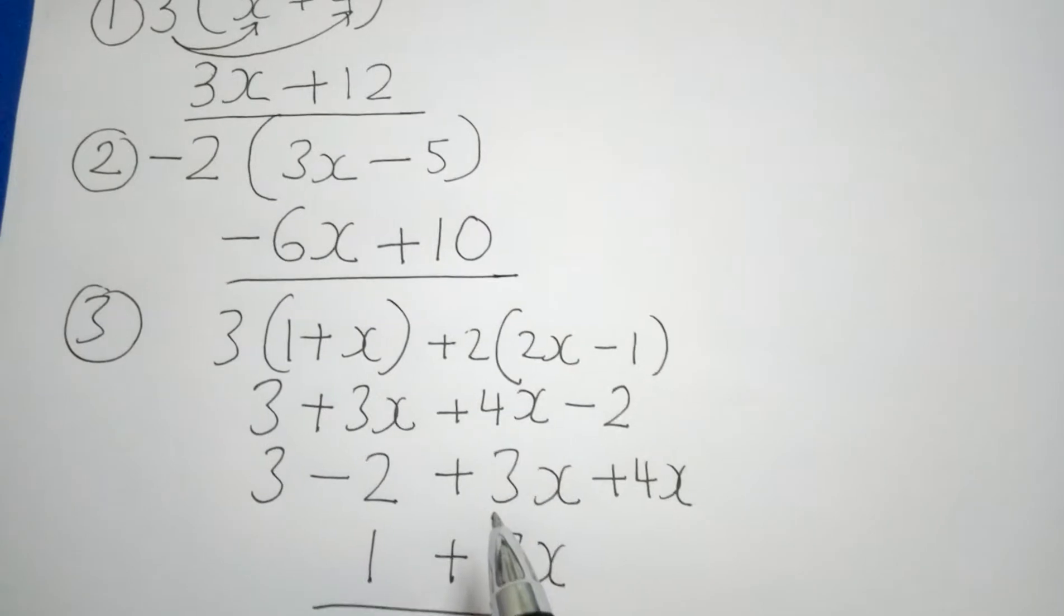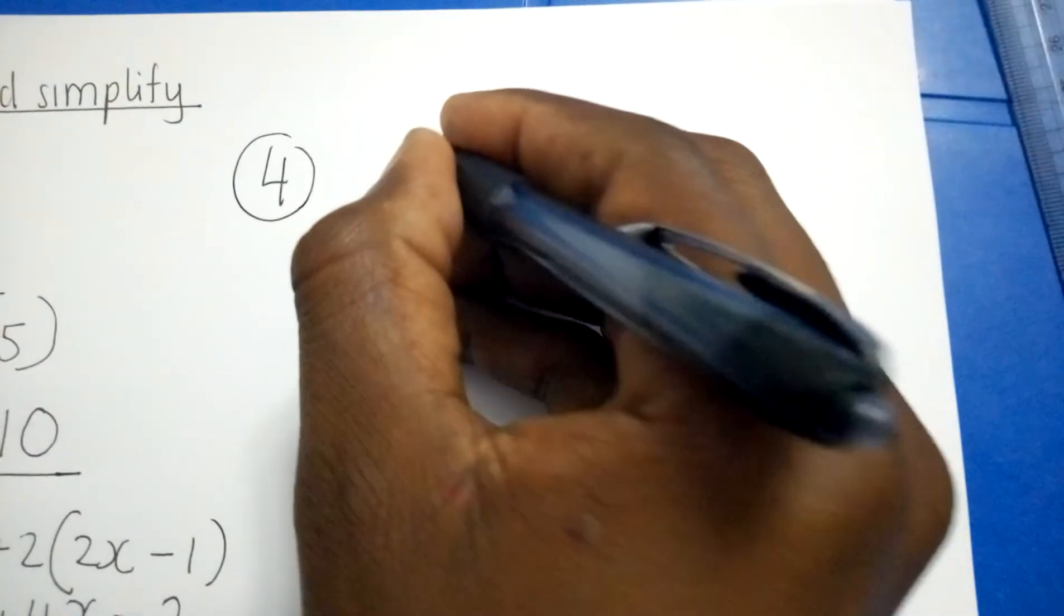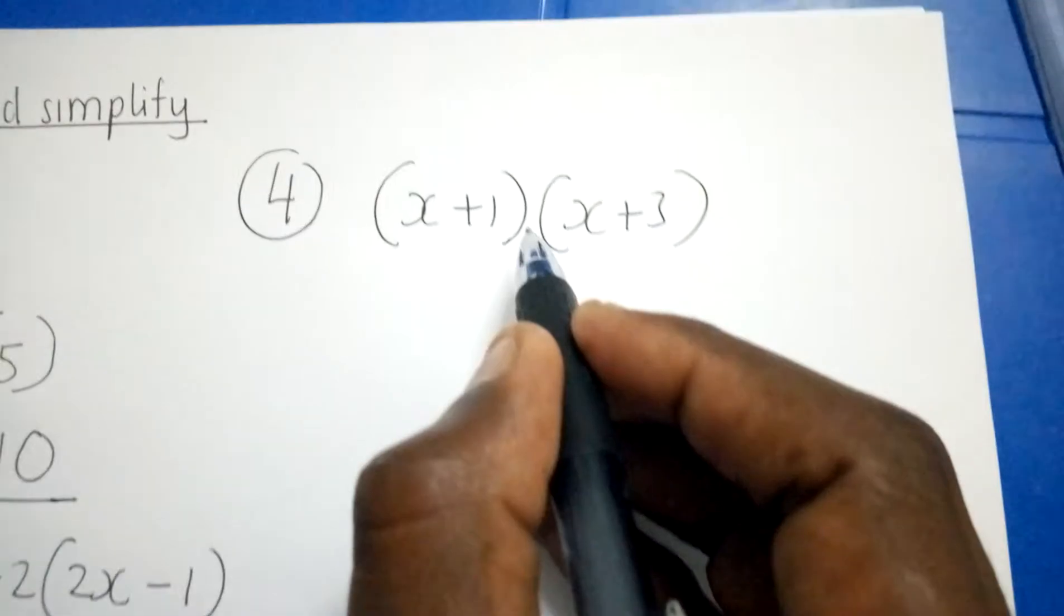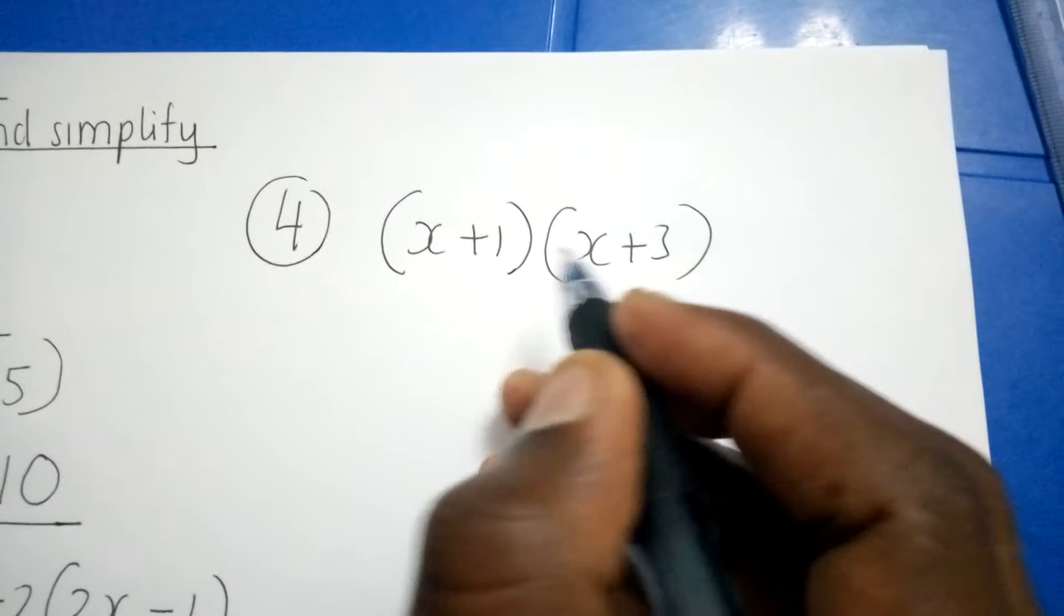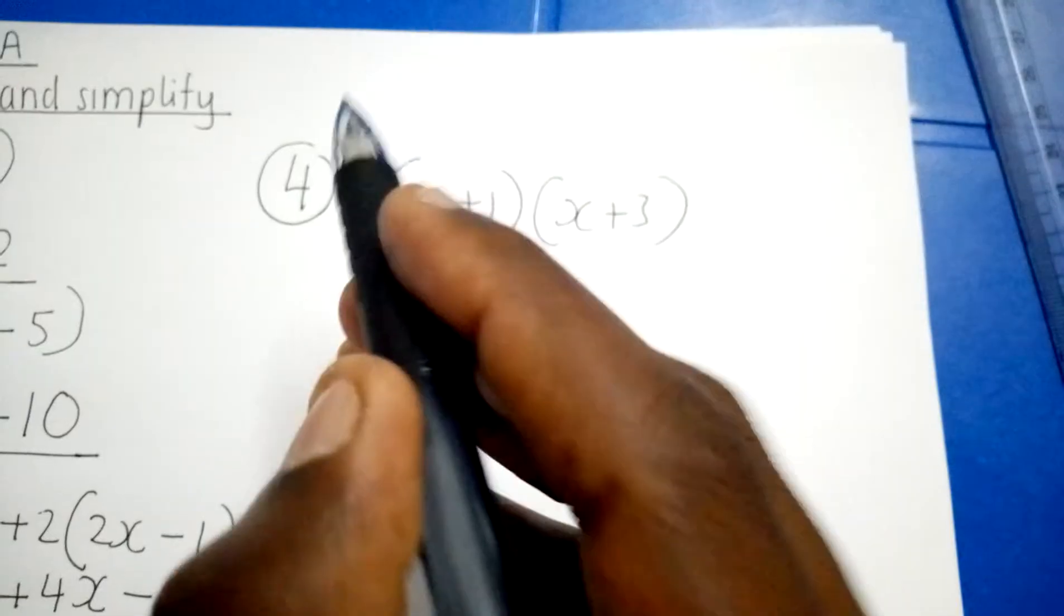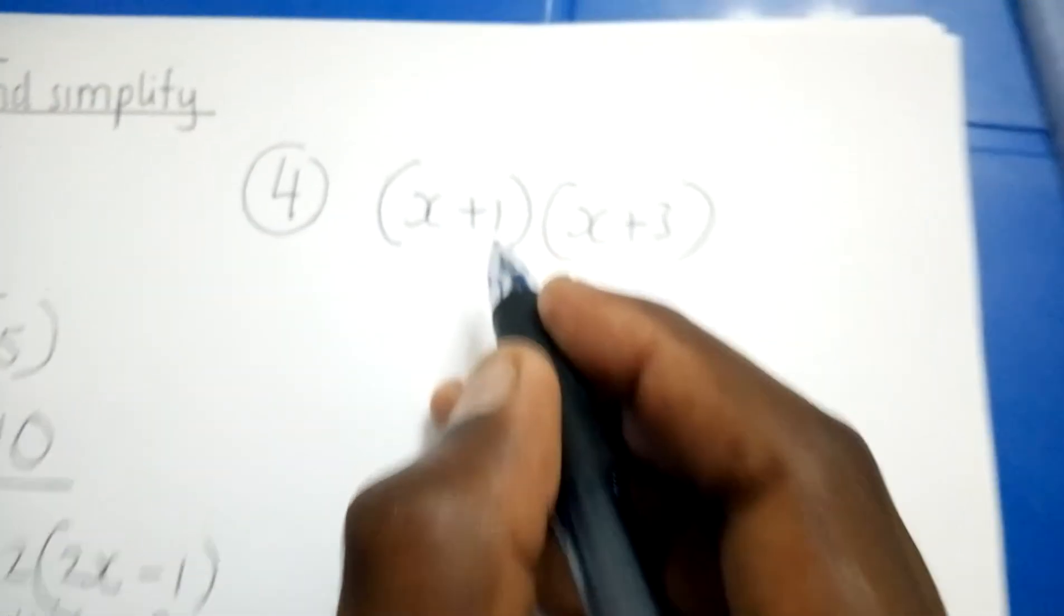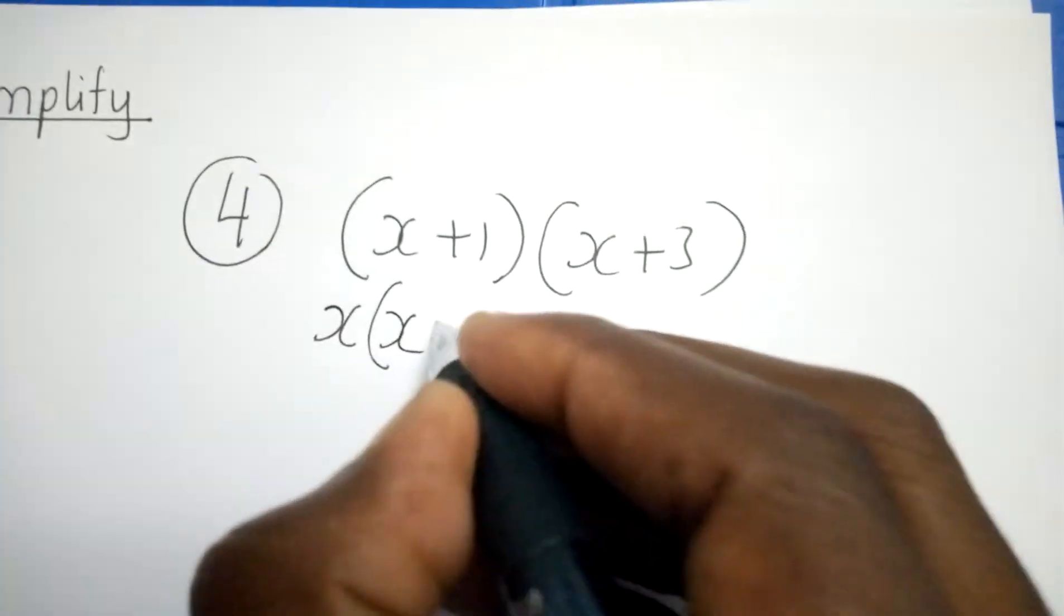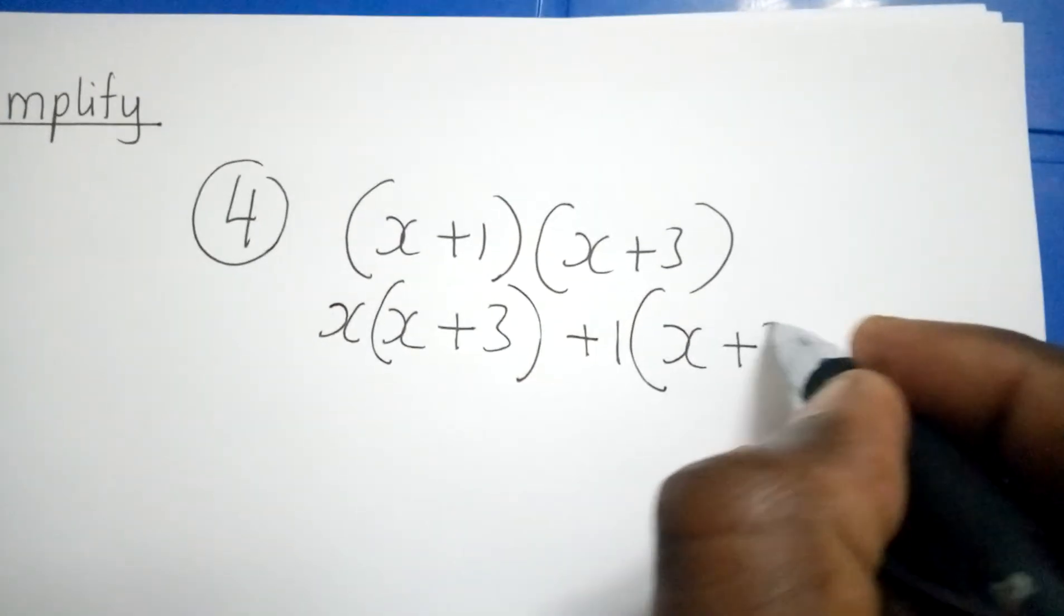Now for our fourth example, what if we have two brackets? That's (x+1) and perhaps (x+3). These two brackets are multiplying, that's why we don't have any sign between the two brackets. Now because two brackets are multiplying, it means each component in this bracket will multiply the second bracket. The first x will multiply the second bracket, positive 1 will also multiply the second bracket.